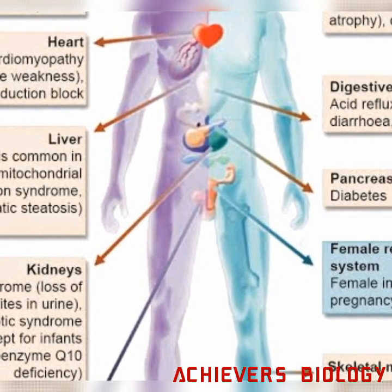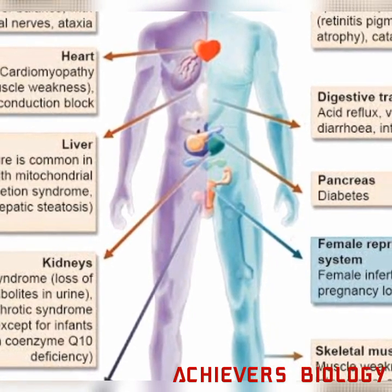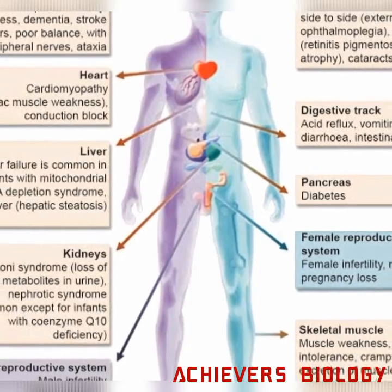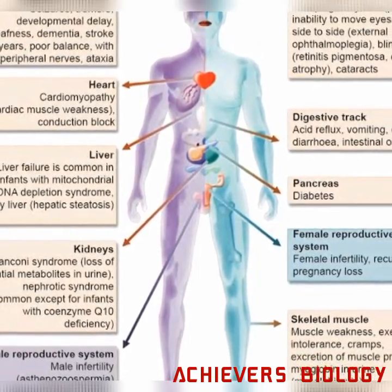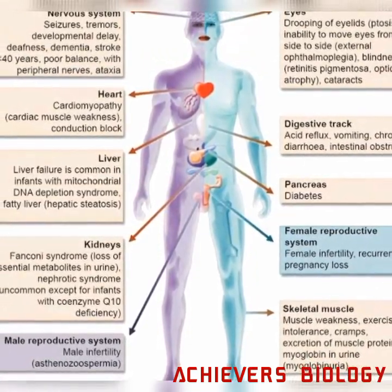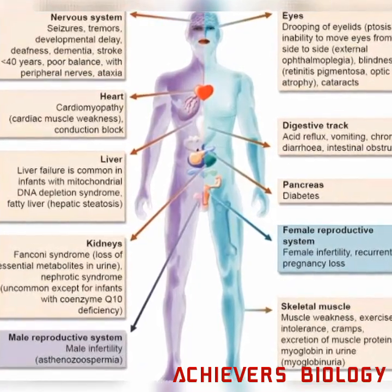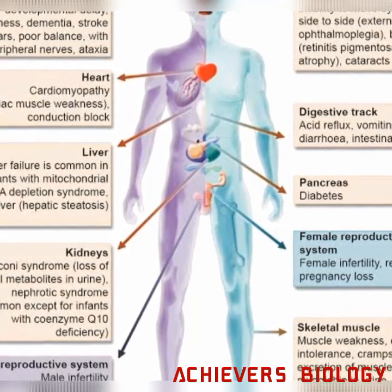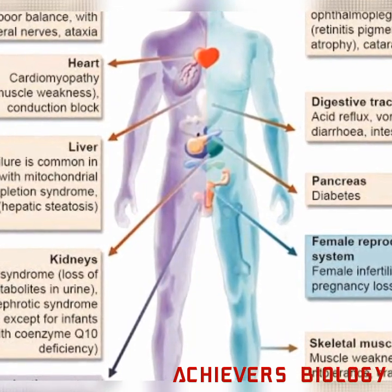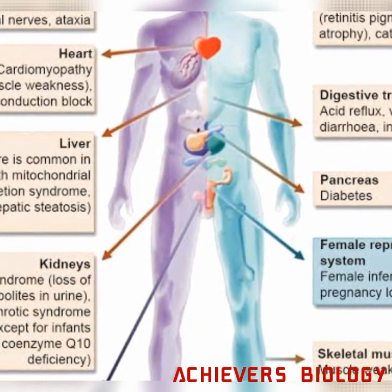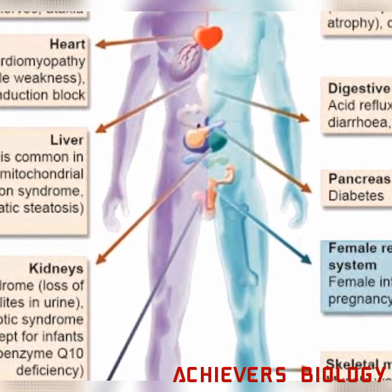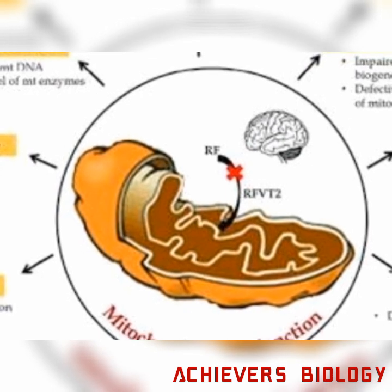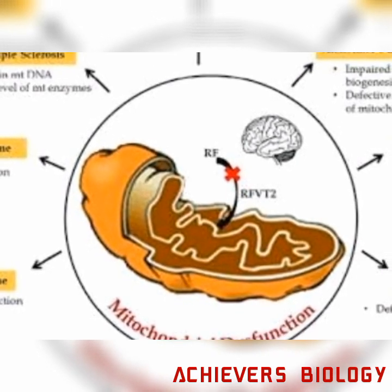Alzheimer's disease is a neurodegenerative disease where people don't remember anything, and gradually people forget all things. Parkinson's disease is also a neurodegenerative disease where people have autonomic motor nervous system disabilities.